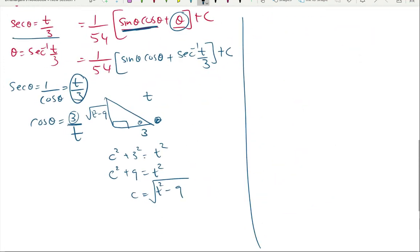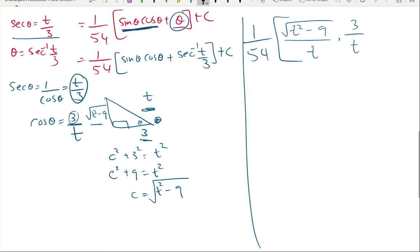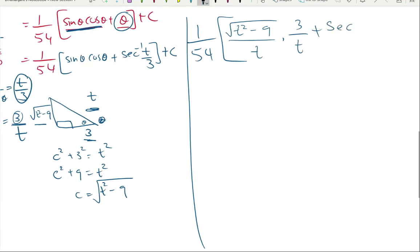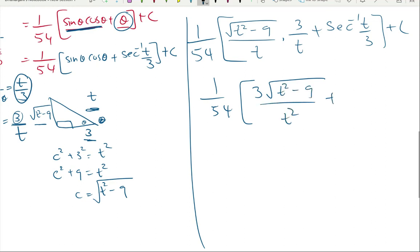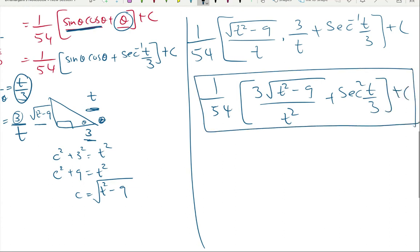Now replacing: sin(θ) = opposite/hypotenuse = √(t² − 9)/t, and cos(θ) = 3/t. So the final answer is (1/54)·(3√(t² − 9)/t²) + sec⁻¹(t/3) + C. This was a very good problem with a lot to learn. Try it again by yourself — see you in the next video!